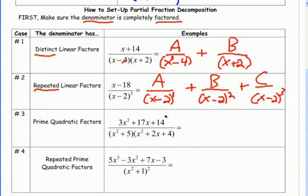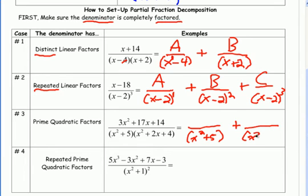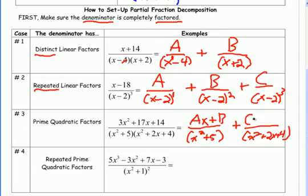Now we have prime quadratic factors. In the denominator I have quadratics — degree 2 — but neither one of these factors. This is similar to distinct linear factors: each one still gets its own fraction since they're not repeated. Here's the difference with quadratic: the numerator has to be one degree less than the denominator. Since the denominator is quadratic, the numerator needs to be linear. So I'll make it ax plus b for the first fraction, and since I've already used a and b, the second gets cx plus d.